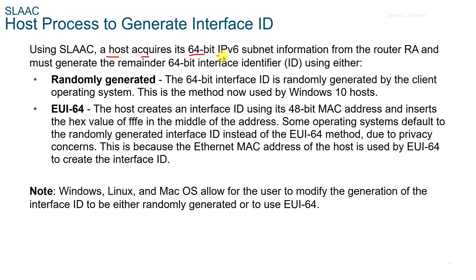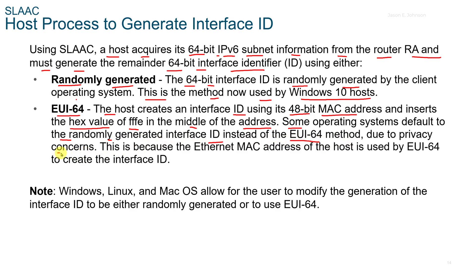Using SLAAC, a host acquires a 64-bit IPv6 subnet from the router RA and must generate the remainder of the 64-bit interface identifier using one of two methods. First, randomly generated: the 64-bit interface ID is randomly generated by the client — this method is now used by Windows 10 and above. Second, EUI-64: the host creates an interface ID using its 48-bit MAC address and inserts the hex value FFFE in the middle. Some operating systems default to the randomly generated interface ID instead of EUI-64 due to privacy concerns, since EUI-64 shares the MAC address.